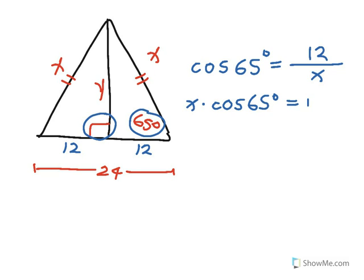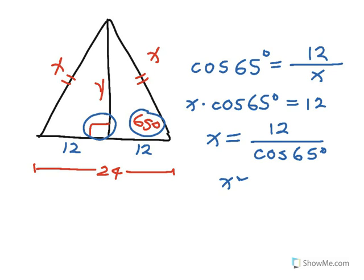Now to isolate X, I'll divide both sides by the cosine of 65 degrees. So I'll get X is equal to 12 over the cosine of 65 degrees. Using my calculator, I get X is approximately 28 units long.